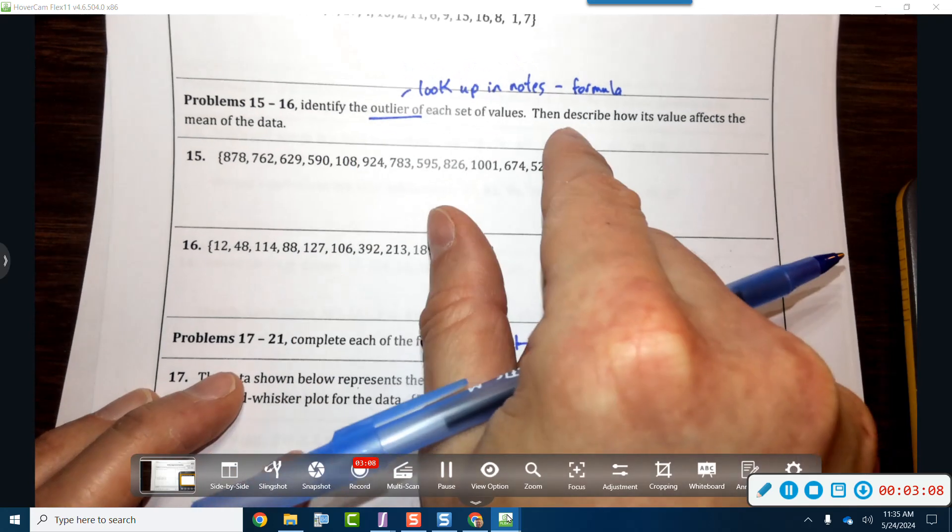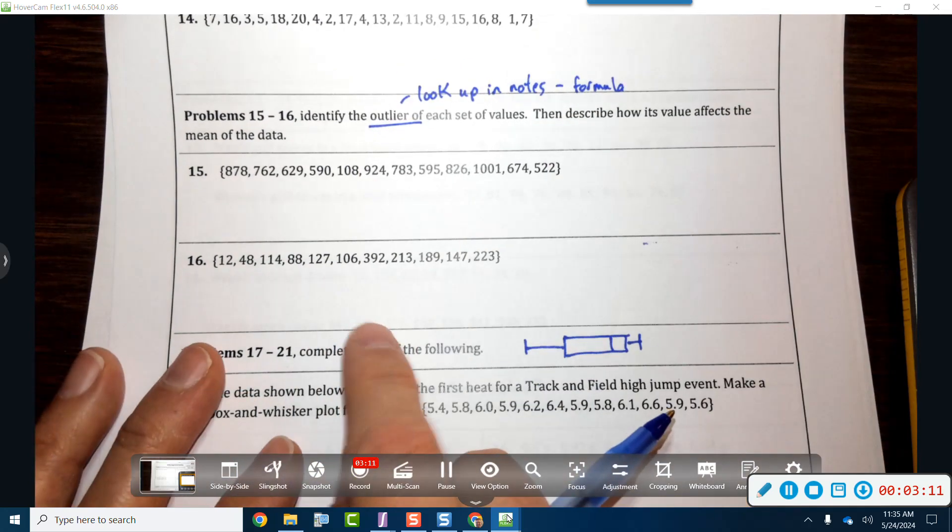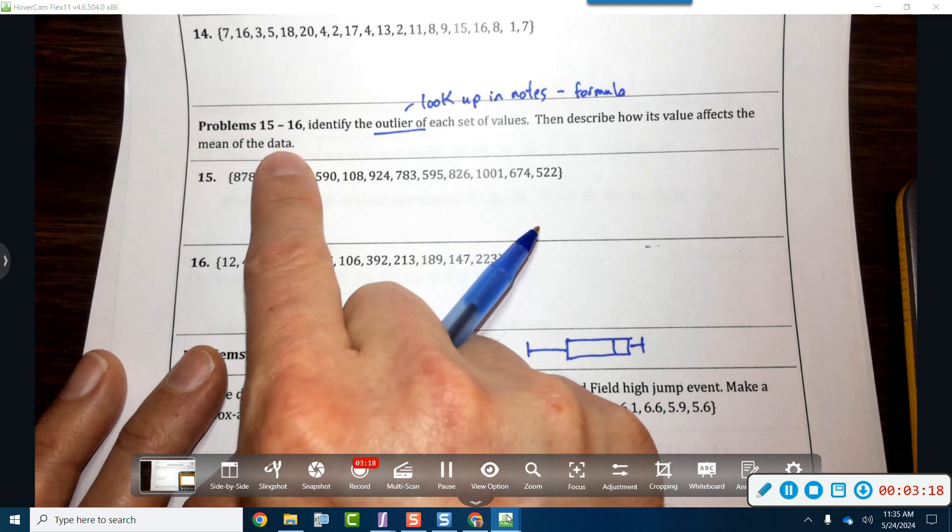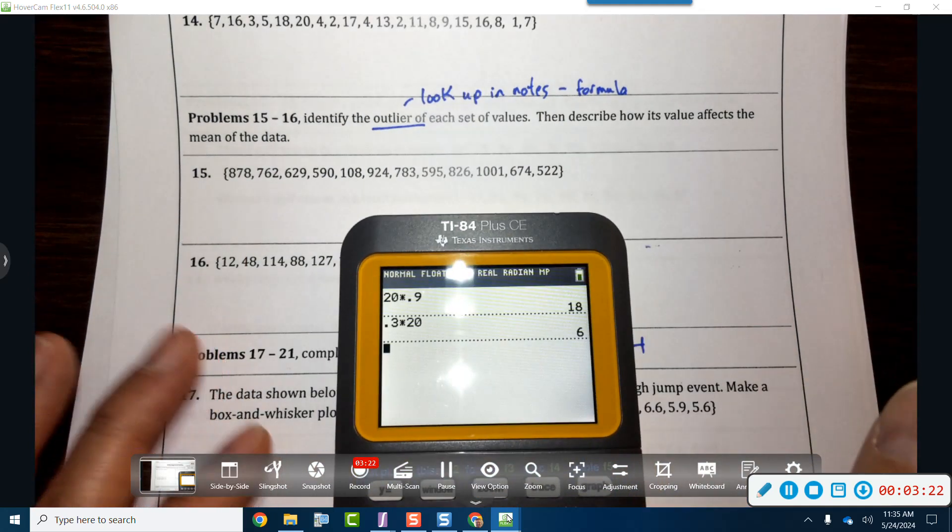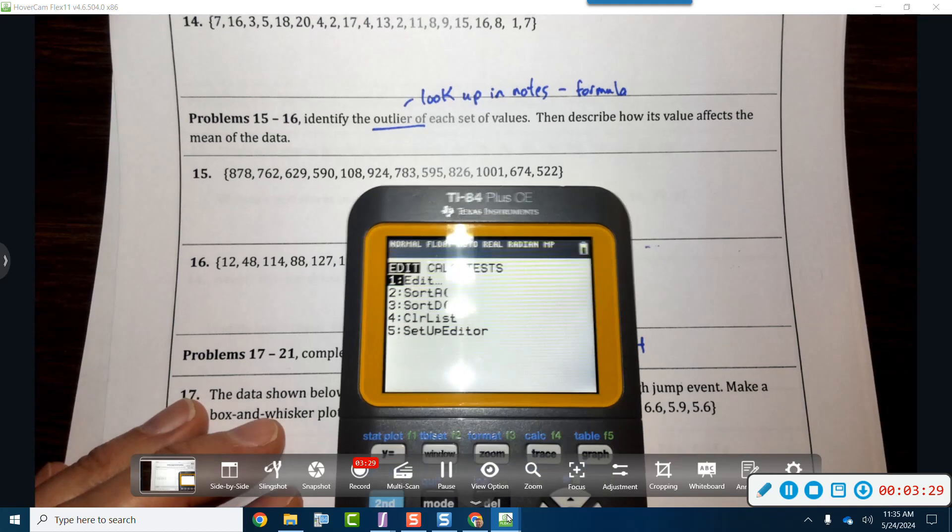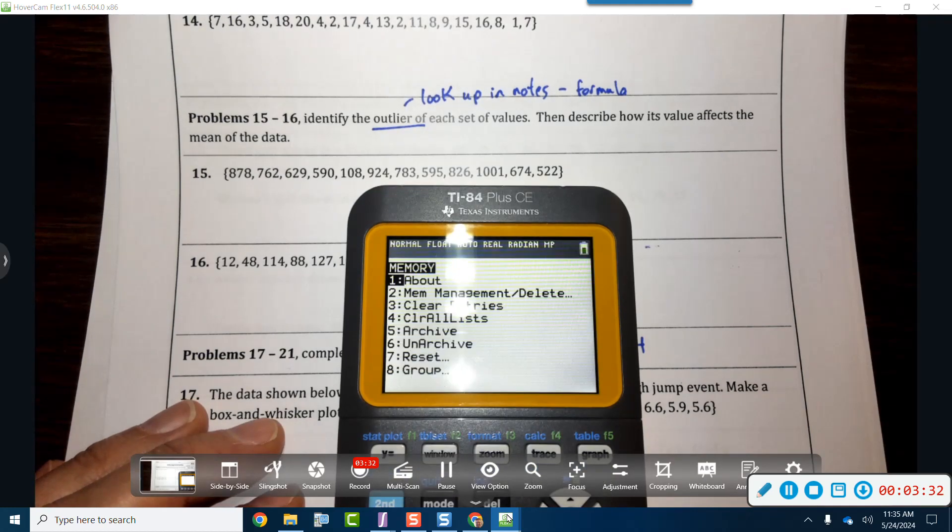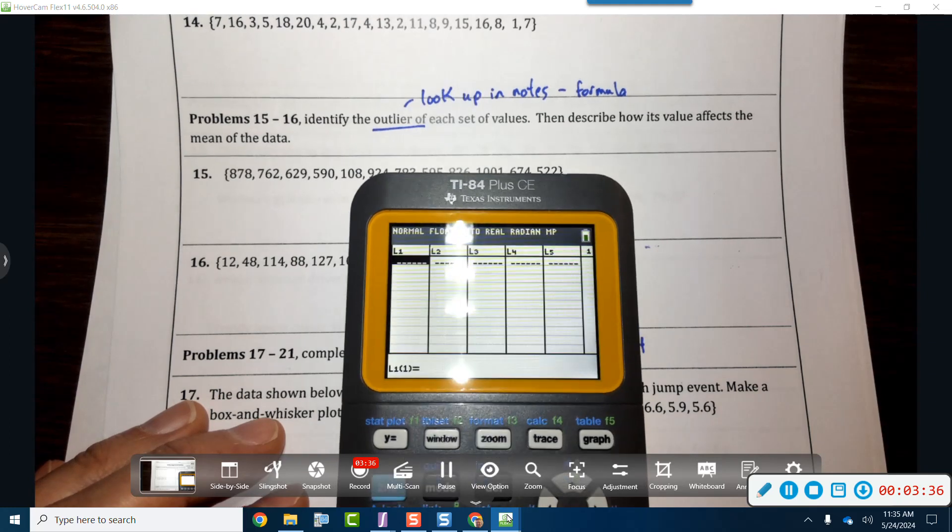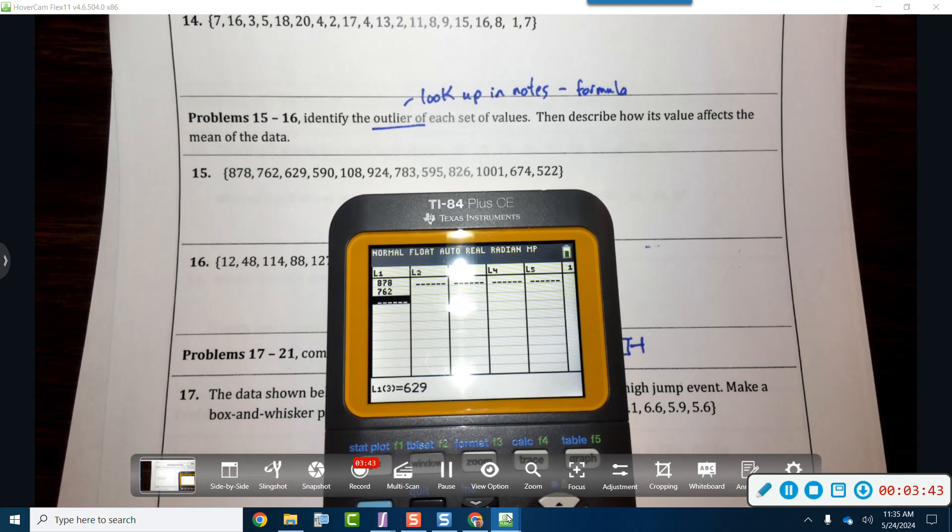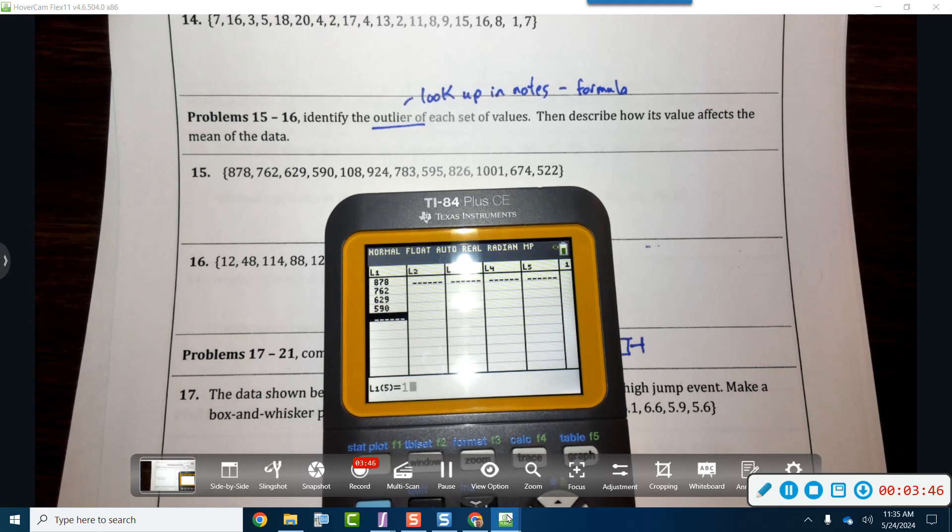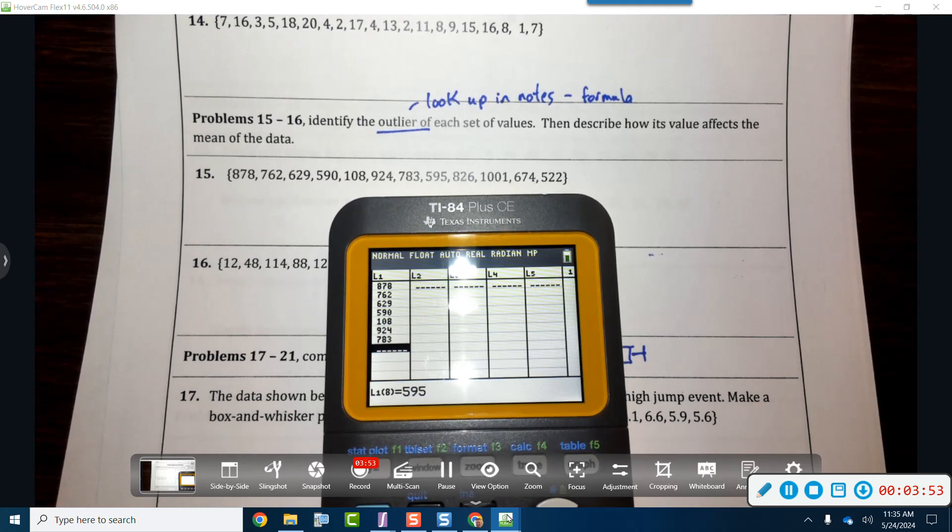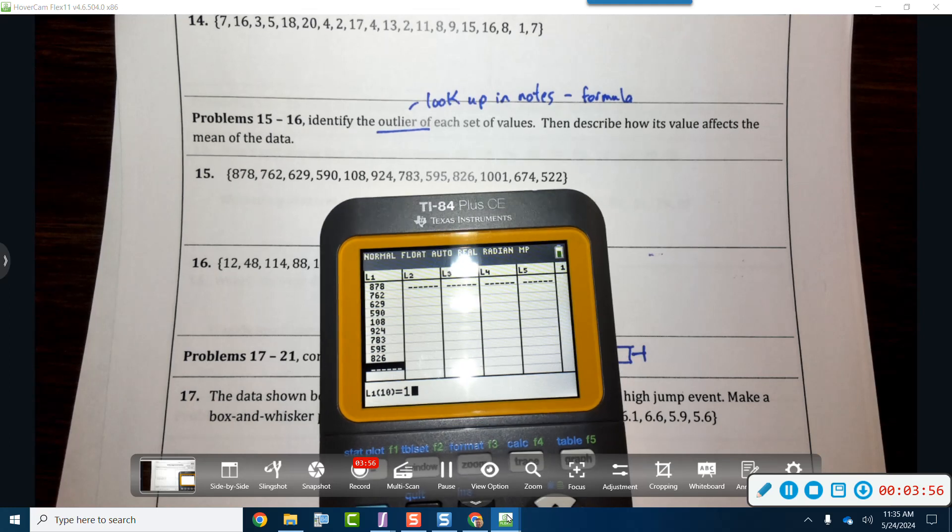All right, so now we're going to look for the outlier. We've got two sets here, so let's identify the outlier in each set of values, then describe how its value affects the mean of the data. So what you would do is first of all you need to put all of your data in the list. So let's clear the list, go edit, and we're going to put 878, 762, 629, 590, 108, 924, 783, 595, 826, 1001.